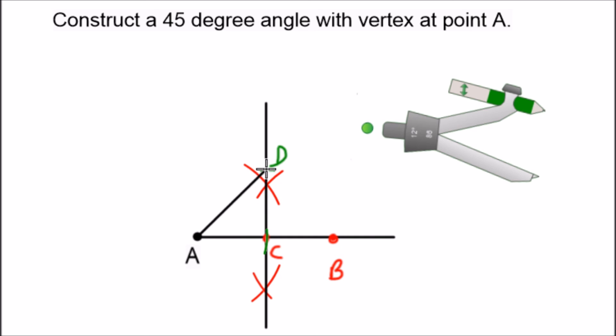Now because we constructed a 90 degree angle here and the length of side AC is equal to the length of side DC, that tells us that the measure of angle DAC is equal to 45 degrees.